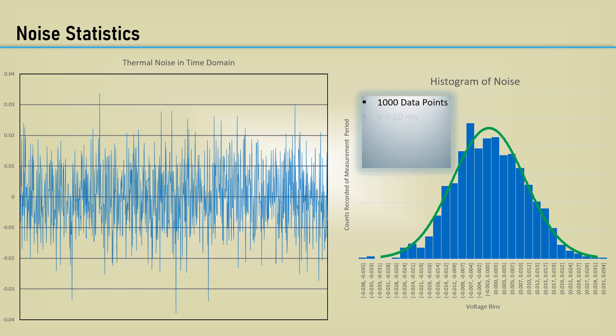Those 1,000 data points represent noise voltage with a standard deviation of 10 millivolts. The distribution function results in 68.3% of the voltage samples are within plus or minus 1 sigma deviation.